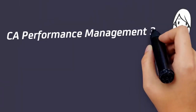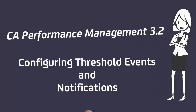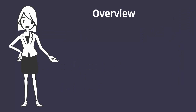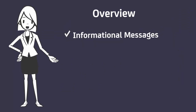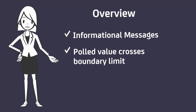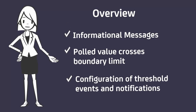Welcome to CA Performance Management video: Configuring Threshold Events and Notifications. While poll data provides input to CA Performance Management, the product creates output in the form of informational messages called events. In particular, a threshold event is a type of event triggered when a poll value crosses a boundary limit. This video examines the configuration of threshold events and the configuration of notifications which are produced from events.